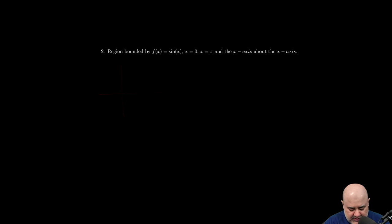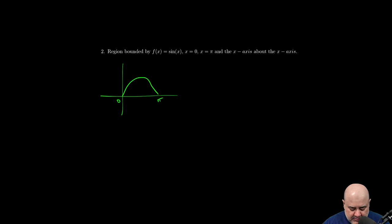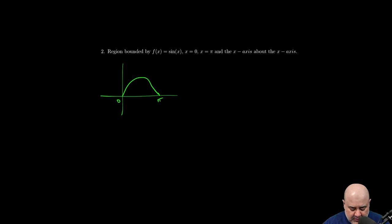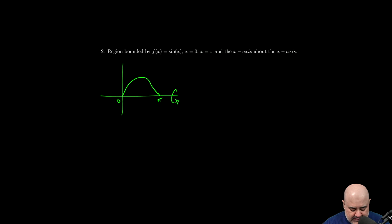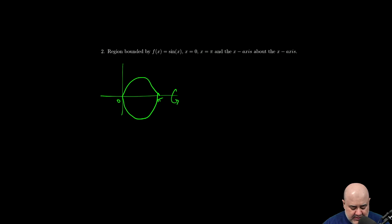So again, quick sketch time. Sine x looks like this. This is zero, this is pi. I know that because sine of pi is zero.